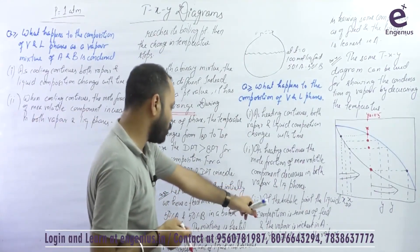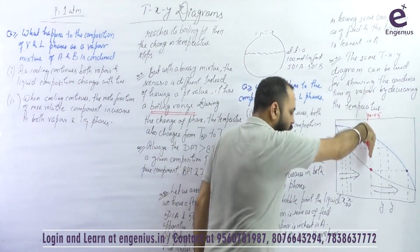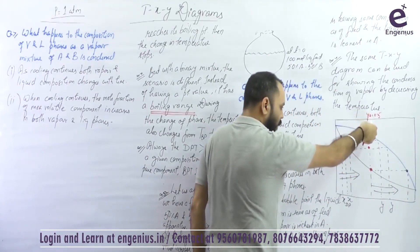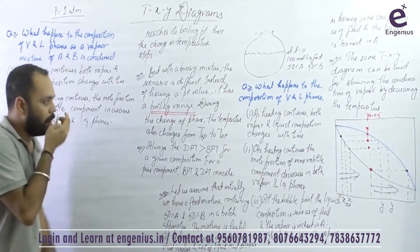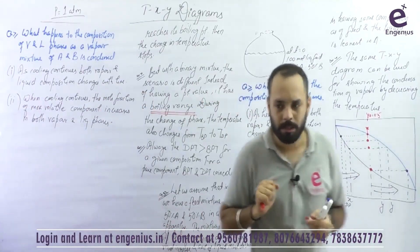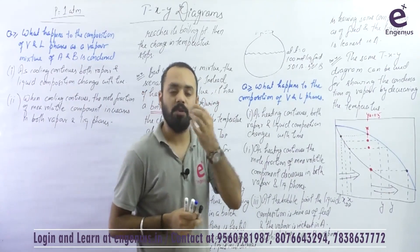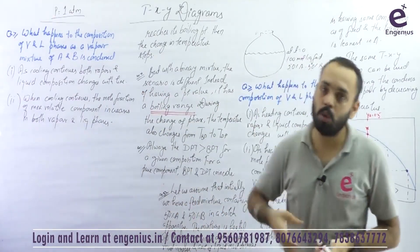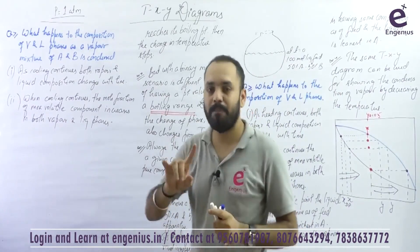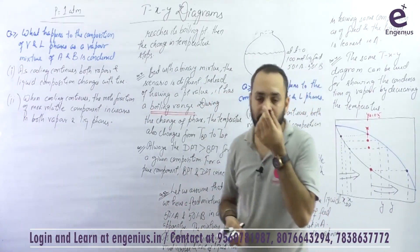At the bubble point, the liquid composition is the same as that of the feed, and the vapor is richest in A. Similarly, when I was reaching the bubble point by cooling the mixture, the vapor formed has the highest possible composition of A, and at the dew point the liquid formed has the lowest possible composition of A. Both cooling and heating can be represented on the same T-X-Y diagram.